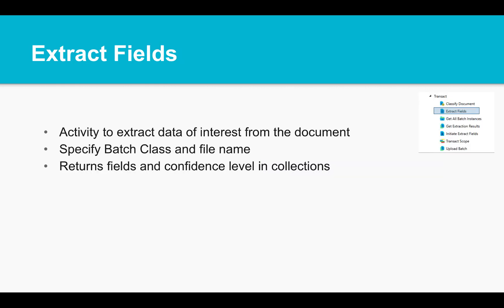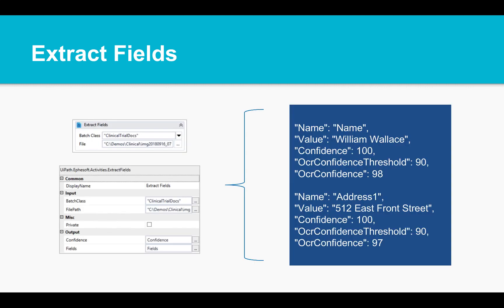The Extract Fields call will both classify the document and extract the appropriate fields for that document type. This is also synchronous. Similar to the Classify Document call, this activity provides field names and values, as well as a determined confidence level.